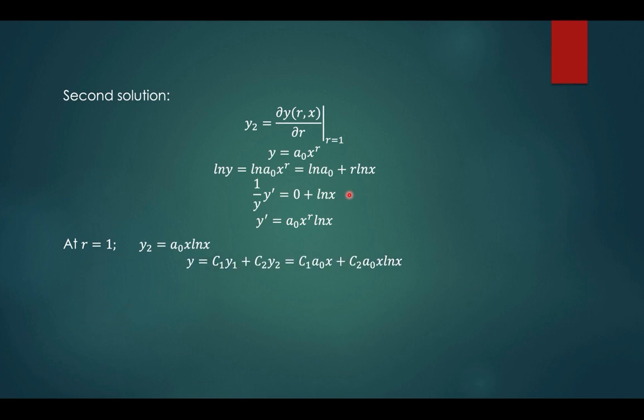Since we have a second order differential equation, your y is c1 y1 plus c2 y2, where c1 and c2 are arbitrary constants. y1 is a sub 0 times x, and your y sub 2 is a sub 0 x ln of x. You can combine c1 and a sub 0 because these are constants. Also c sub 2, a sub 0, so they can be represented by another arbitrary constants k1 and k2. So the final solution will be y equals k1 x plus k2 x ln of x.